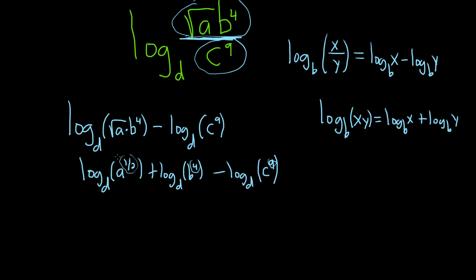You put the 1/2 in the front, just bring it down. So this is 1/2 log base d of a plus 4 log base d of b minus 9 log base d of c. And that would be the final answer.